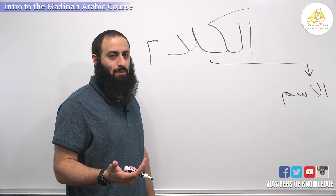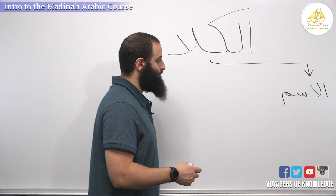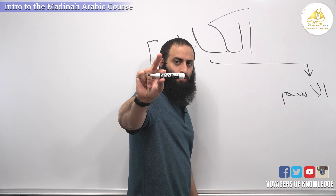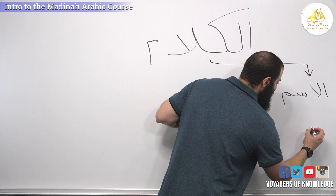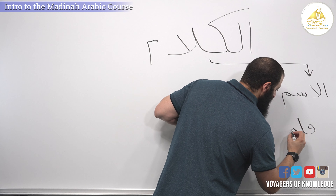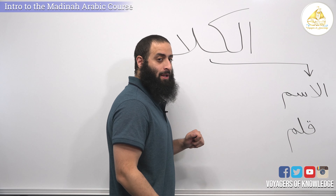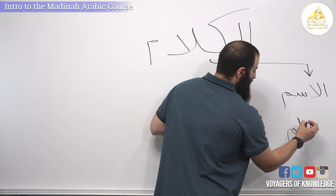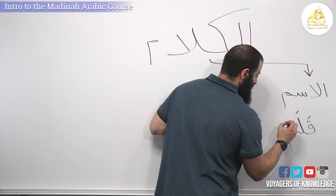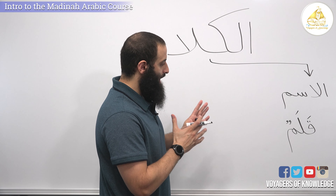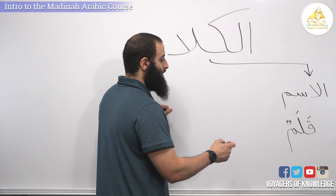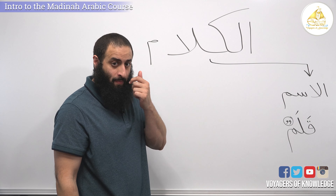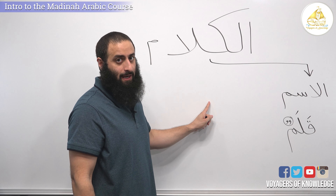How do you identify what is a noun if you don't even know the meaning of the word? Let's take a word you may or may not know: Qalam. If you saw this word and didn't know its meaning, how would you know if it's a noun or a verb? You can look at the حركات. There's one specific حركة that is the giveaway — it's the tanween at the end. Nouns can accept tanween at the end, whereas verbs — فعل or أفعال — cannot.